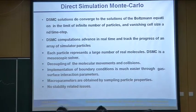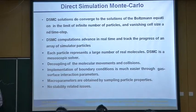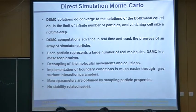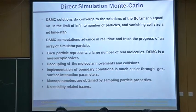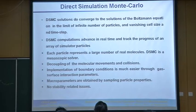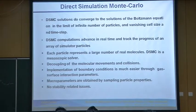An important point: each particle in the DSMC method represents a large number of real molecules. We want to work with real molecules, but the sheer number of real molecules is so large that you cannot work with them for a system size of centimeters or so. Therefore, in the DSMC method, we consider a group of real molecules to form a simulated particle or computational particle, and we work with these computational particles. Each of these particles could represent as many as 10^8, 10^9, or 10^10 real molecules.